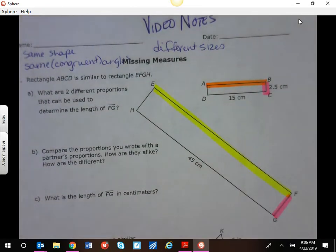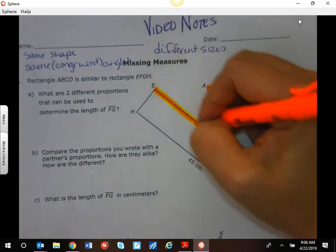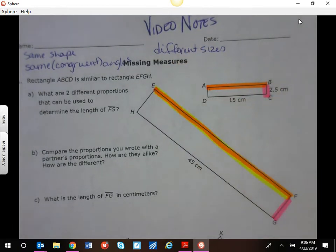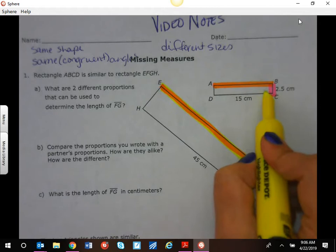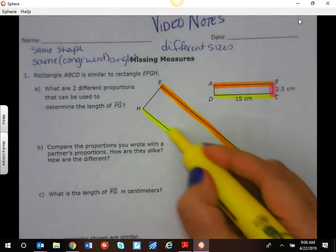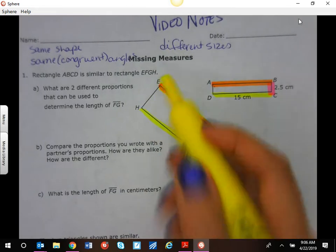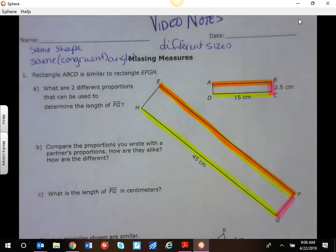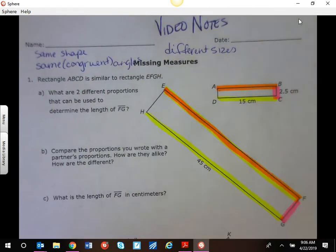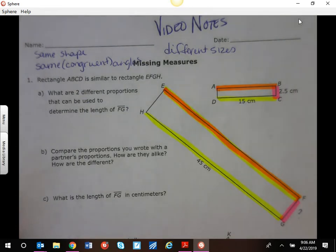And then we can say BD and GH and then you have HE and DA and you can see that they go in order on the letters. So if we wanted to find FG which is this side we can do a proportion a couple different ways.